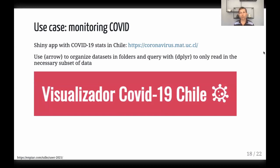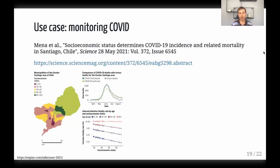Another use case of using Arrow for multi-file datasets treated as one comes from a group monitoring COVID statistics. They used Arrow similarly to query with dplyr data sets backed by multiple files. There's a Shiny app you can check out, and they also have a paper published in Science looking at COVID incidence and mortality based on this data.